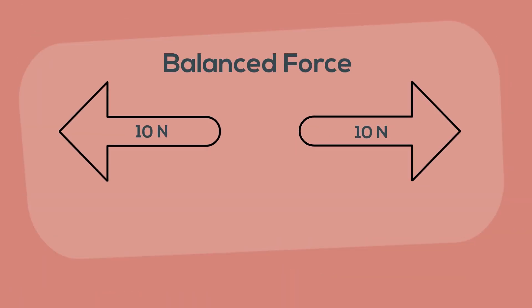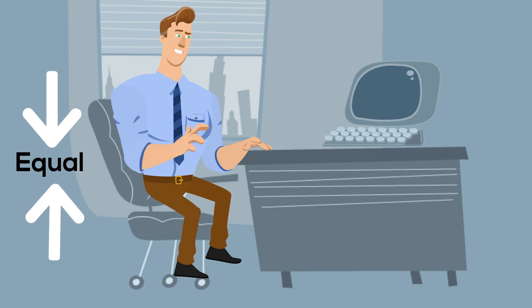When the forces on an object produce a net force of zero, the forces are balanced. Balanced forces will not cause a change in motion of a moving object. For example, we'll go back to sitting in the chair. The forces are balanced and you do not fall to the ground.